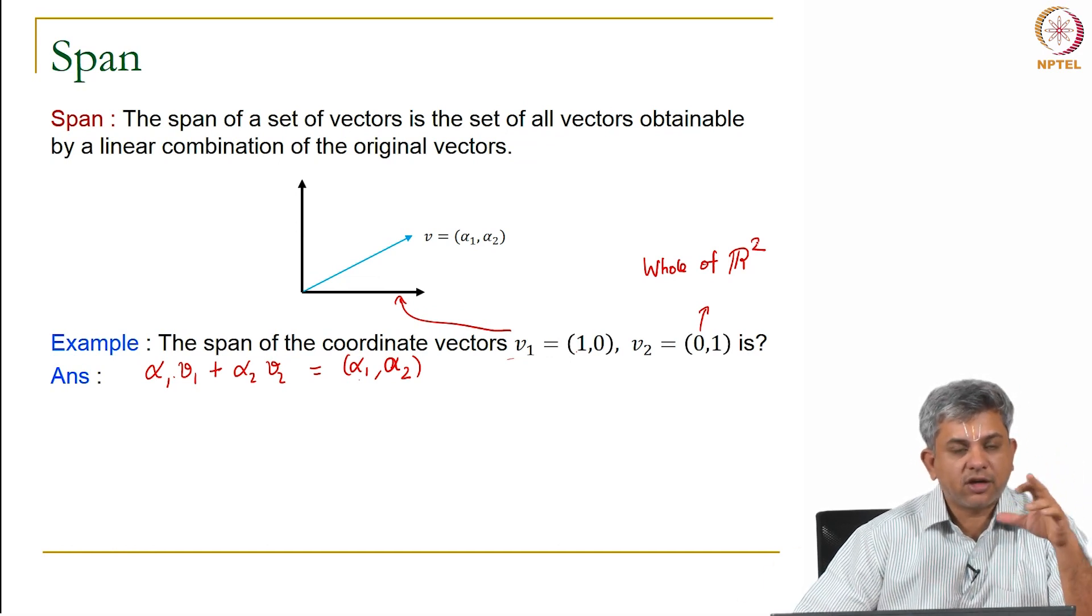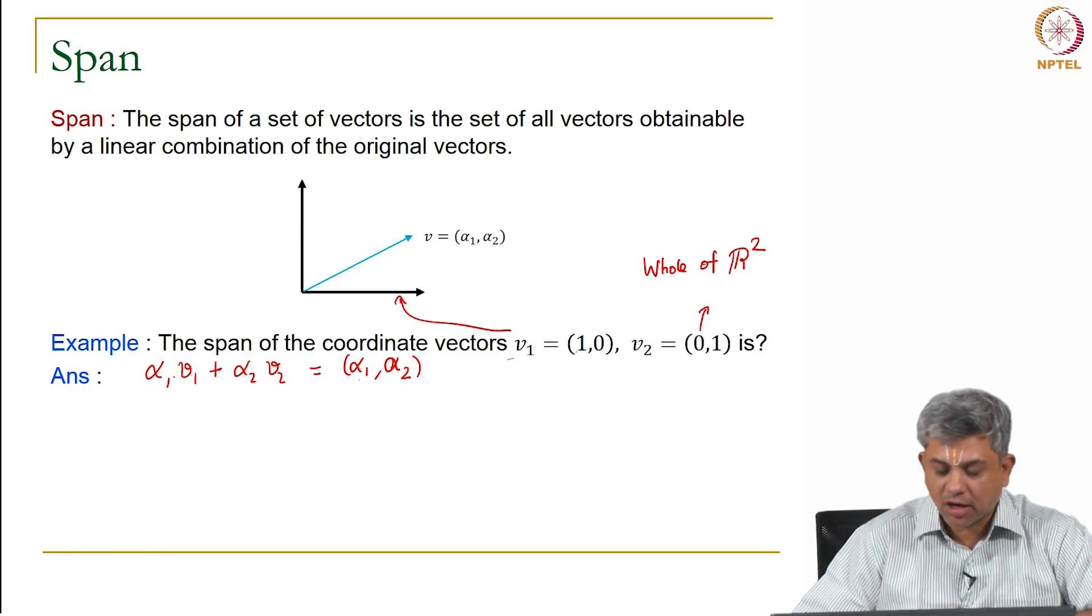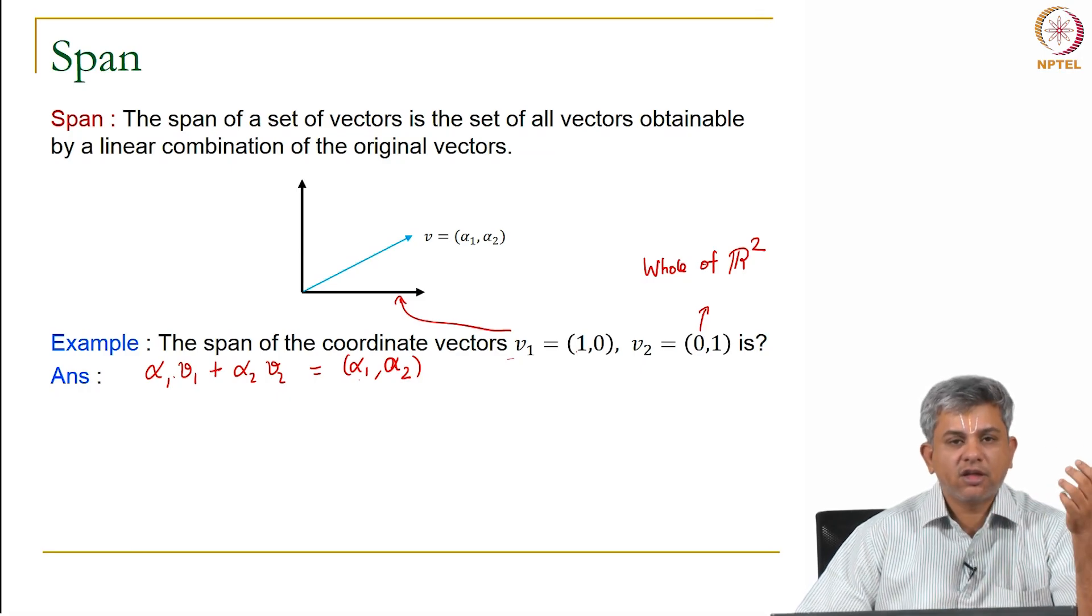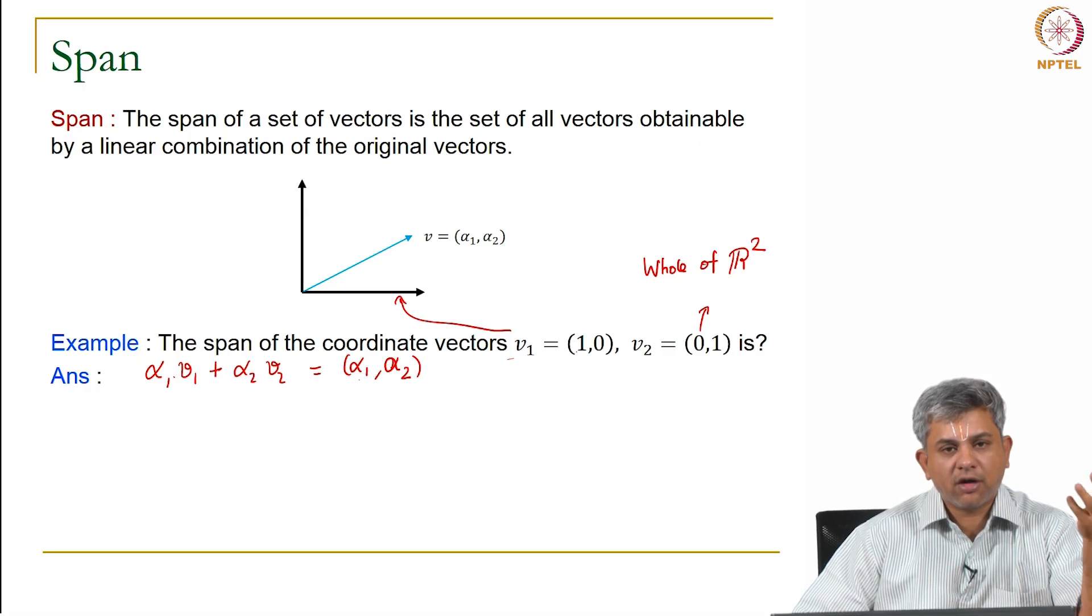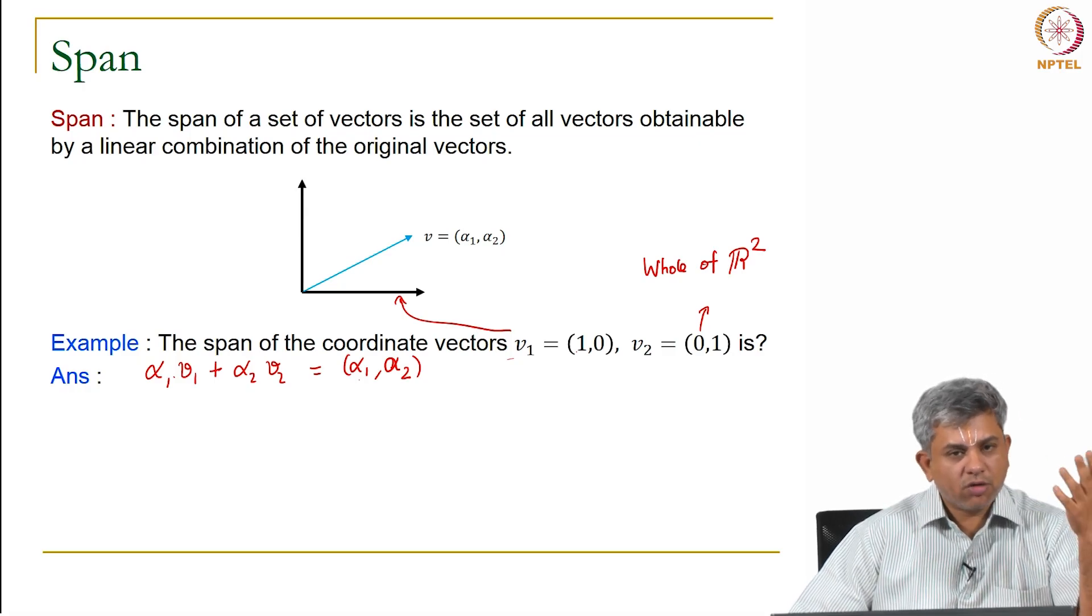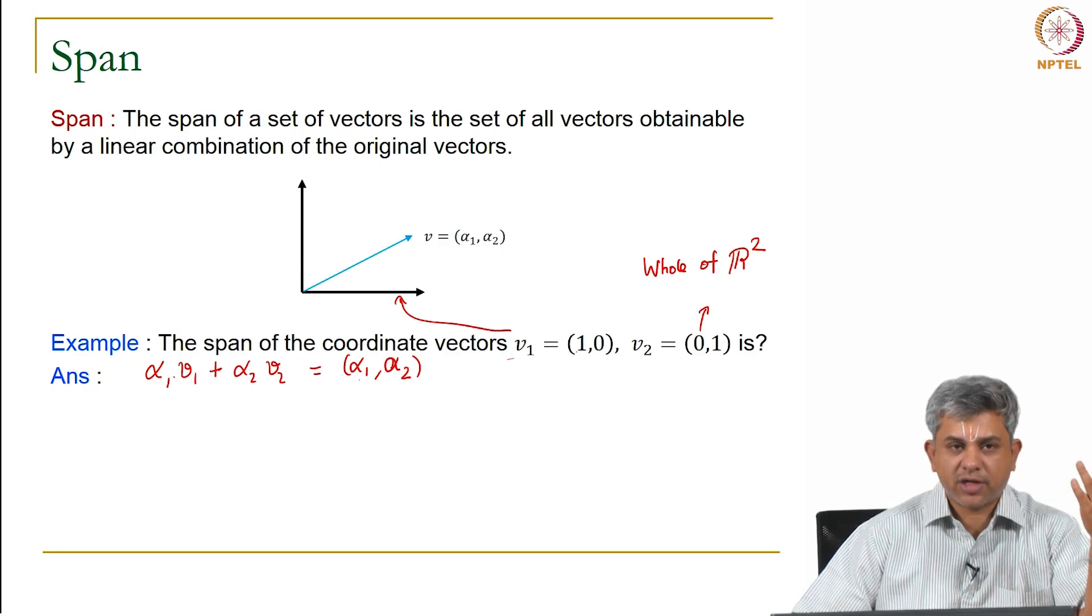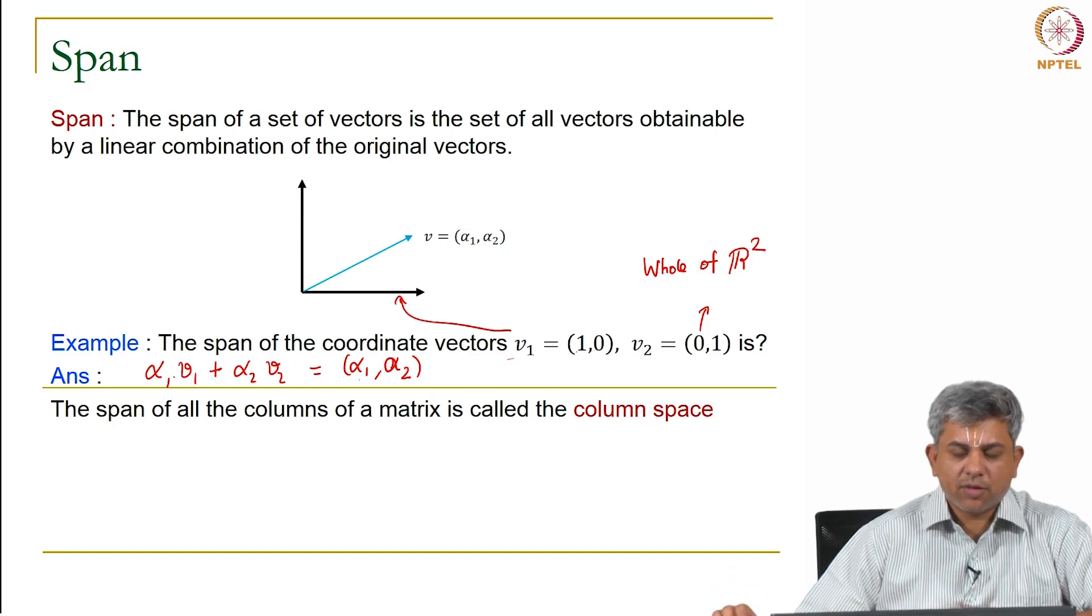Similarly, for 3D, if you define [0,0,1], [0,1,0], and [1,0,0], their span will be the whole of 3D space. The span of all columns of a matrix is called the column space.